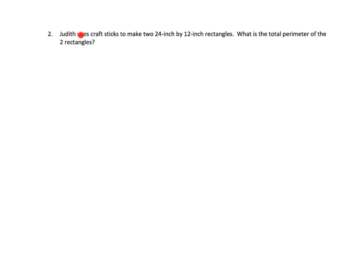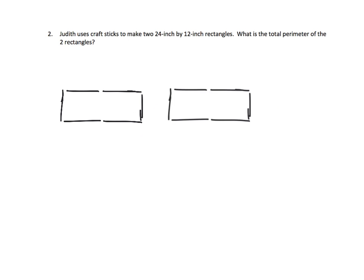So here we have Judith, and Judith uses craft sticks to make two 24-inch by 12-inch rectangles. What is the total perimeter of the two rectangles? I thought I would share this one because it's kind of interesting. So she uses craft sticks to make two 24-inch by 12-inch rectangles. Here is one rectangle that she built, and I'm specifically trying to show you the craft sticks — these are sticks. This is 12 and this is 24, because 12 plus 12 is 24. So here is one rectangle, and it says that she made two of them. So now we've got two of them.